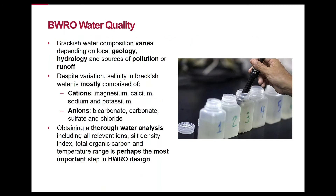The composition of brackish water depends on its source characteristics, including local geology, hydrology, and sources of pollution or runoff. Despite these variations, most of the dissolved solids in brackish water consist of the cations magnesium and calcium — that is hardness — sodium, and potassium. The major anions are bicarbonate and carbonate — that is alkalinity — sulfate, and chloride.